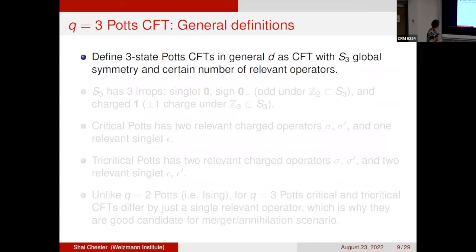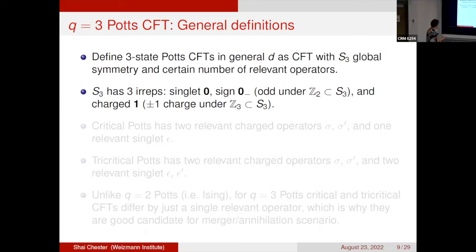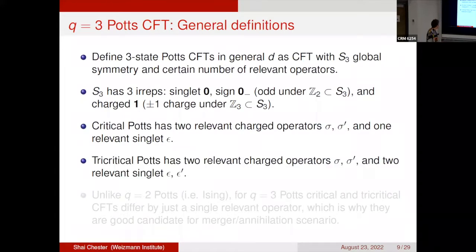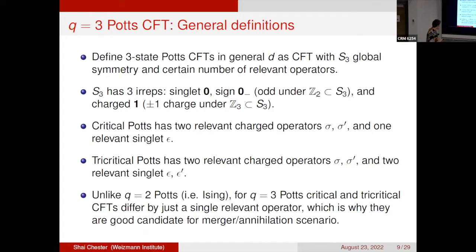Now focusing on q equals 3: the three-state Potts model CFTs for general dimension d are defined as CFTs with S3 global symmetry and a certain number of relevant operators. S3 has three representations: the singlet (called 0+), the sign representation (0−, odd under the Z2 subgroup of S3), and the charge representation (charged under the Z3 subgroup). In 2D, the critical Potts has two relevant charged operators σ, σ' and one relevant singlet ε, whereas the tricritical Potts has two relevant charged operators σ, σ' and two relevant singlets ε and ε'.